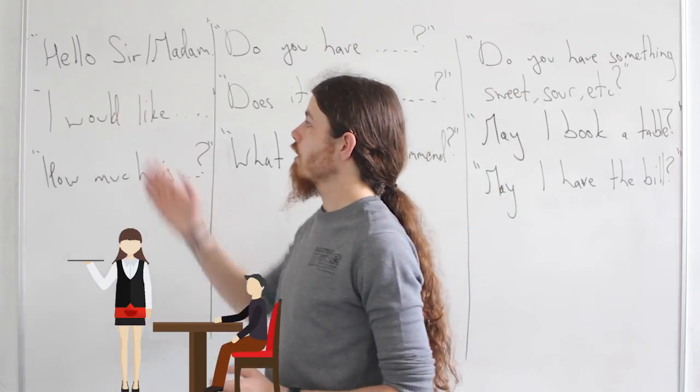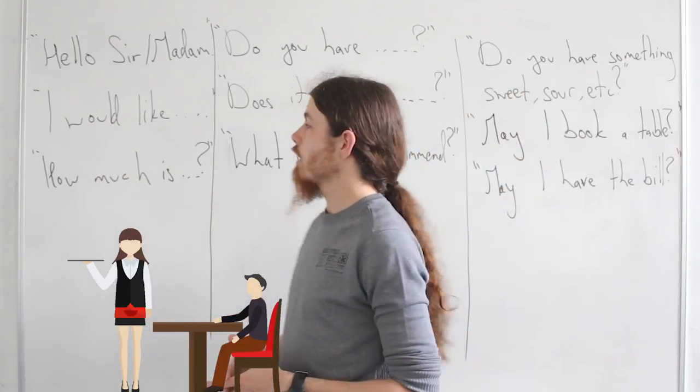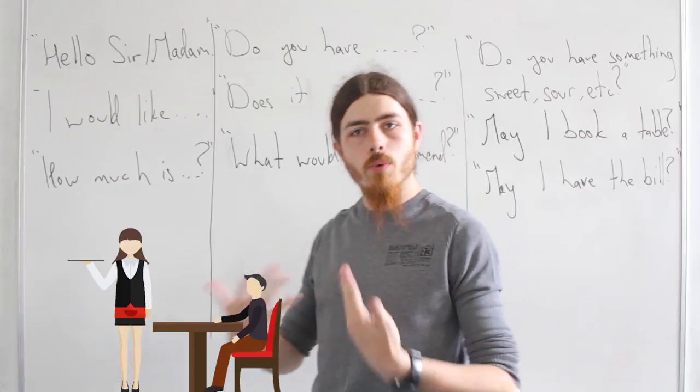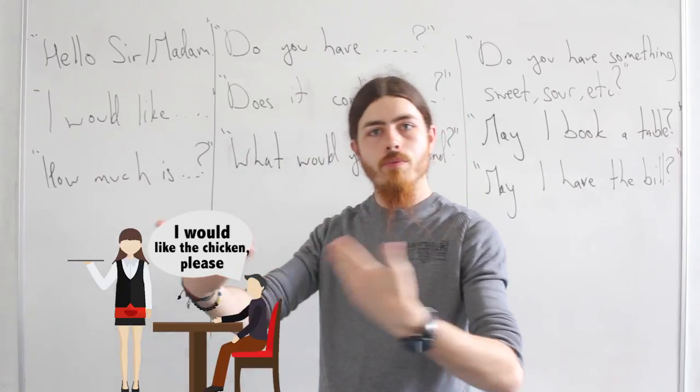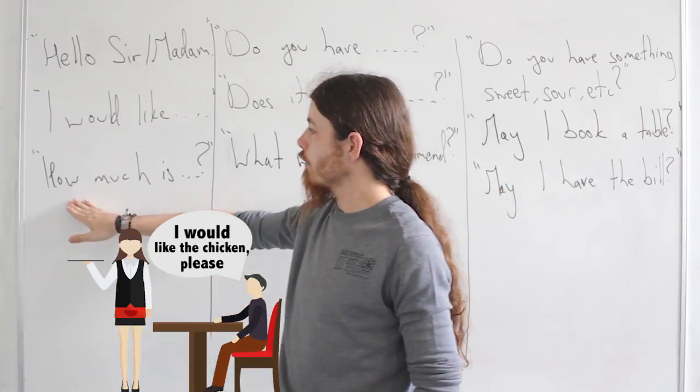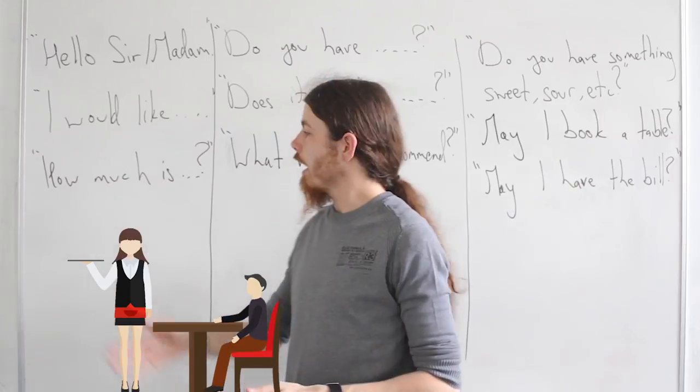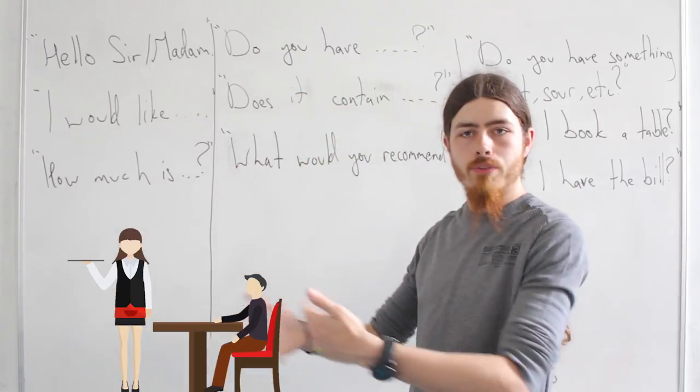After that, you can say I would like and say what you would like, what is on the menu. You have options. And then if you want to ask for the price: how much is the food I want to order? Is it expensive? Is it cheap? How much is this?